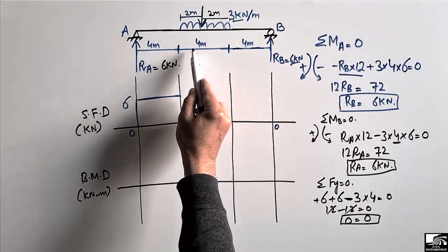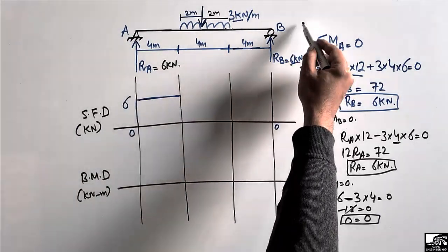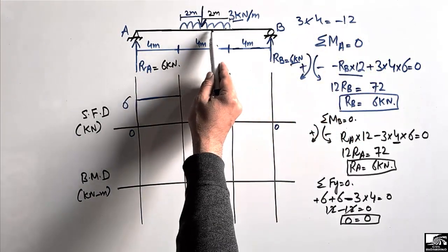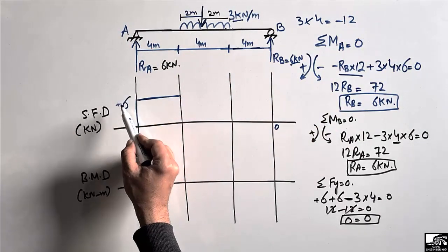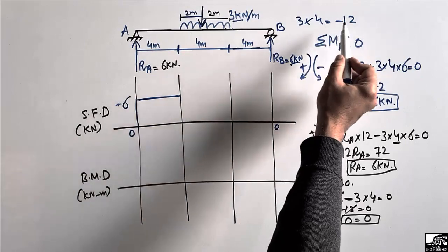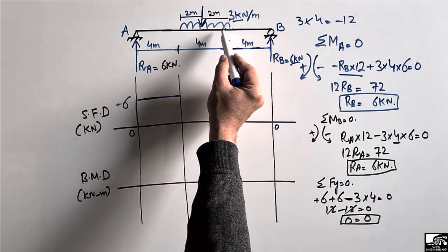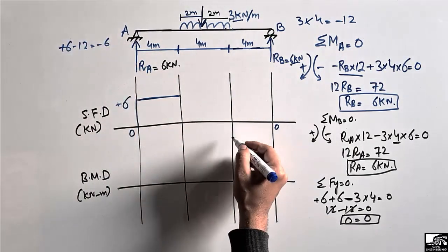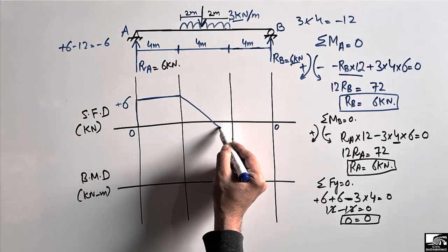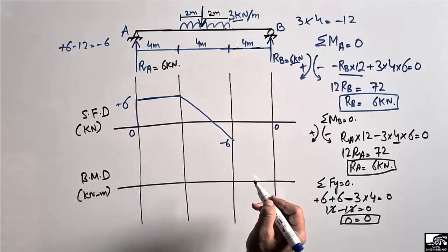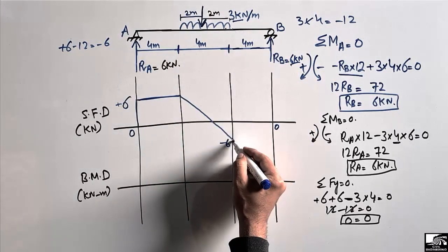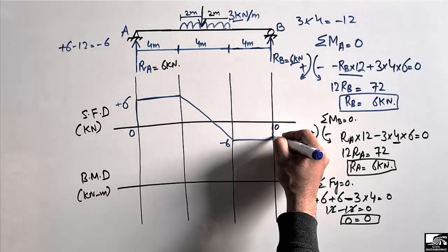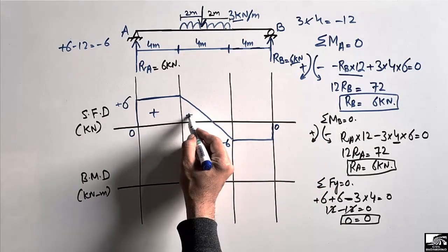The distributed load of 3 kN/m over 4 meters applies a total downward force of 3 × 4 = 12 kN. So the shear force drops from +6 by 12, giving +6 − 12 = −6 kN at the end of the loaded region. The shear force then remains constant at −6 kN for the final 4 meters, and the reaction RB = +6 kN brings the shear back to zero. This completes the shear force diagram.